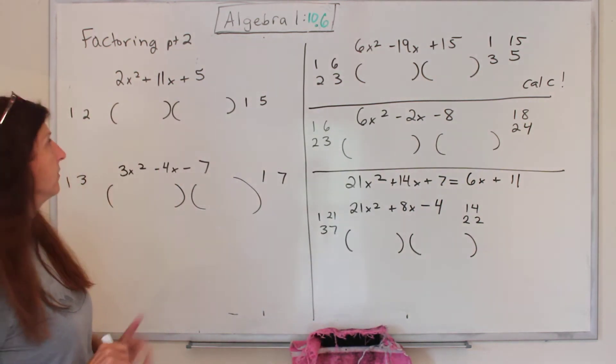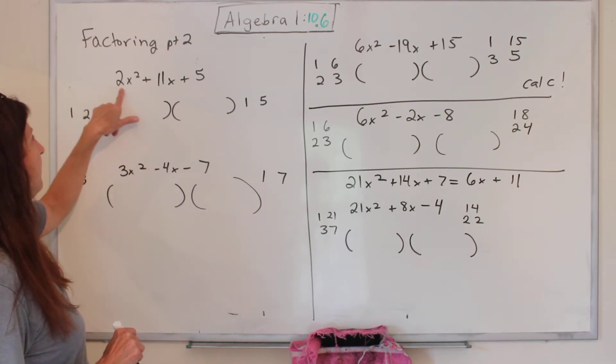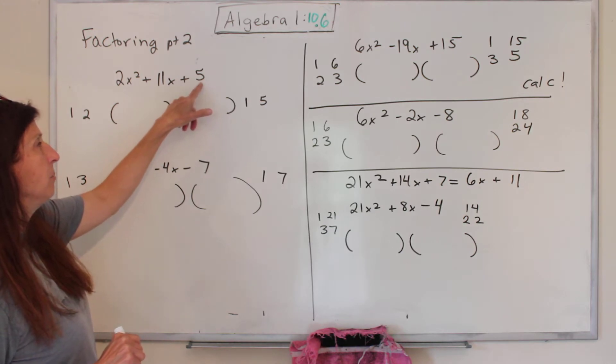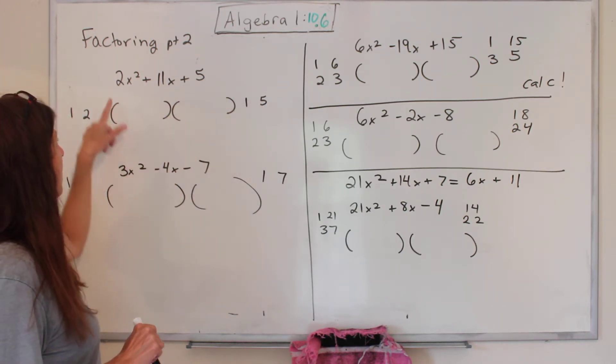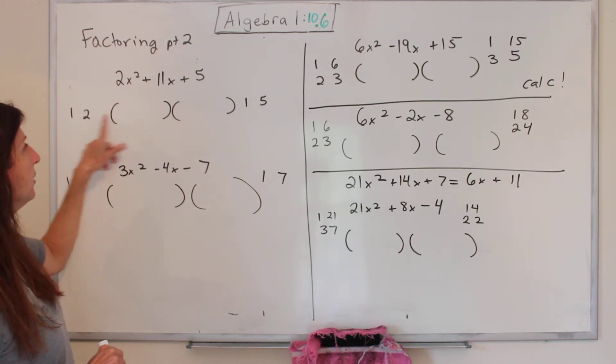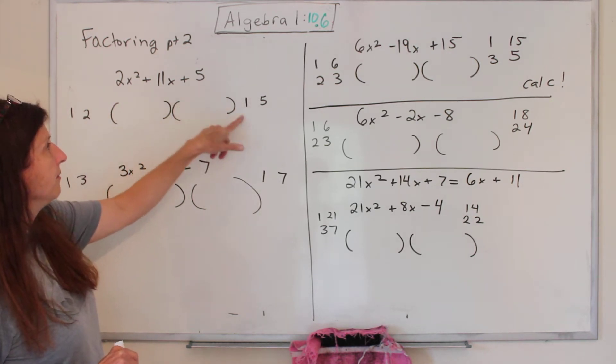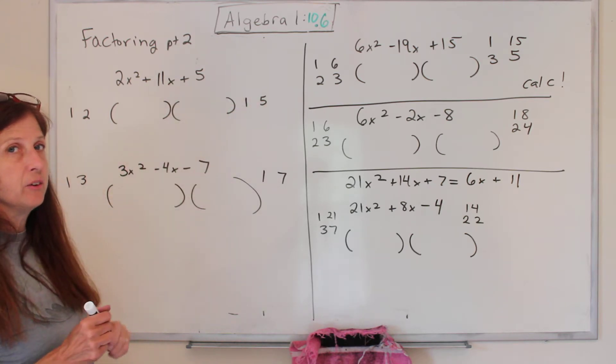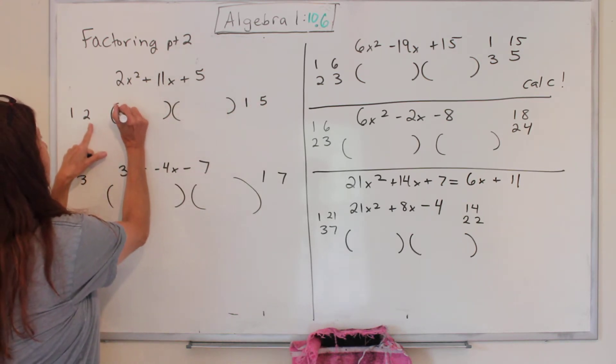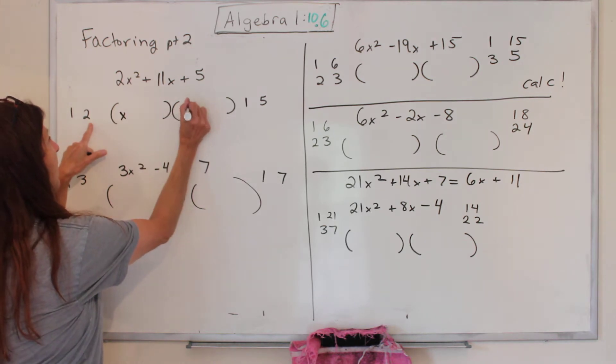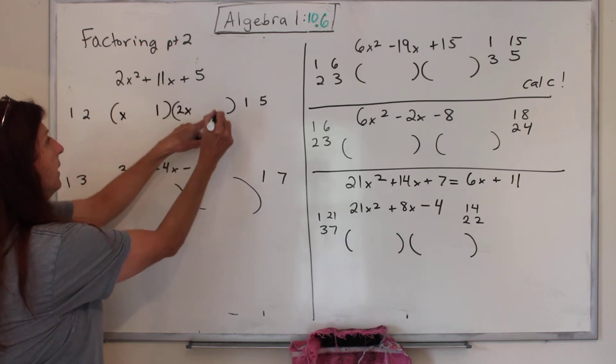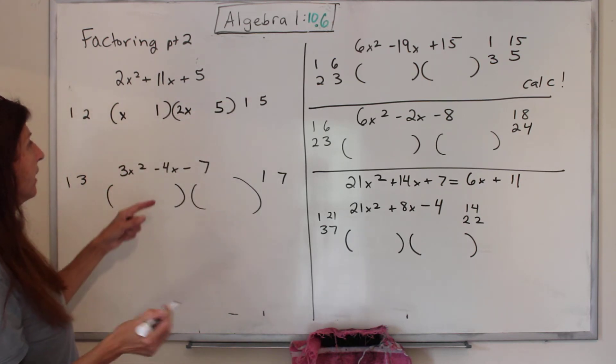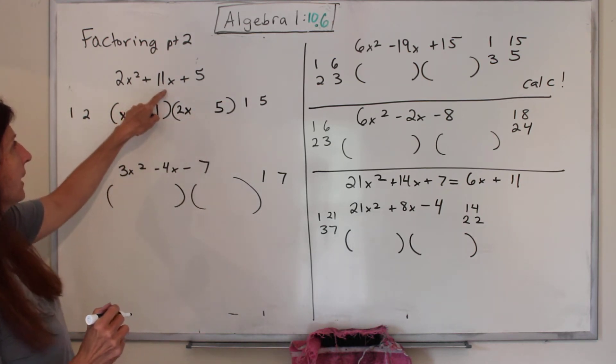So how do you do this? Step 1, you write your parentheses. Step 2, you list the factors of this term. And then you do just like how you did before, you list the factors of this term. So what can you multiply together to get 2? It's 1 and 2. What can you multiply together to get 5? 1 and 5. They gave us an easy one, not too many choices. So we'll try this one being 1 and that one being 2, and we'll try this one being 1 and that one being 5. Let's see if it works.